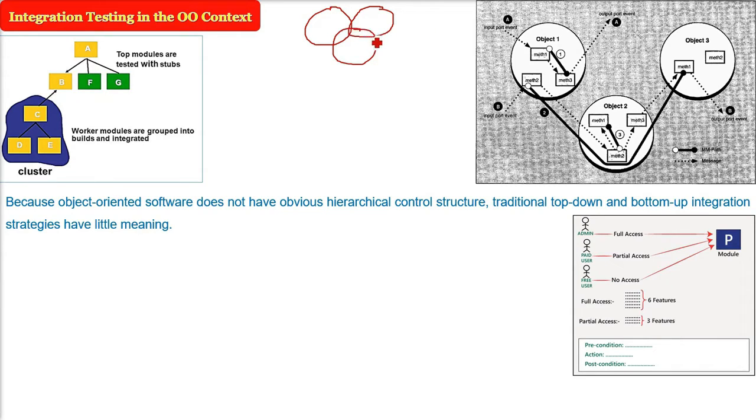That is, we have to test the interfacing. We were using top-down and bottom-up approaches with different types of breadth-first and depth-first search. But here we don't have that obvious hierarchical control structure. So traditional top-down and bottom-up integration strategies have little meaning here.